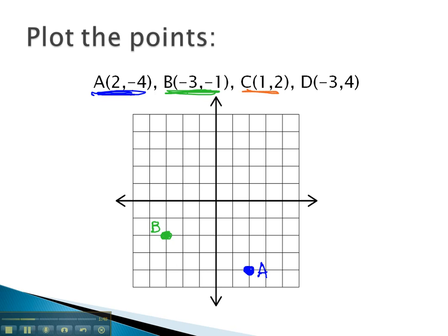Let's try C. 1 comma 2. Always go right first. 1, and then 2 is our up. 1 comma 2 leads us to this point, point C.